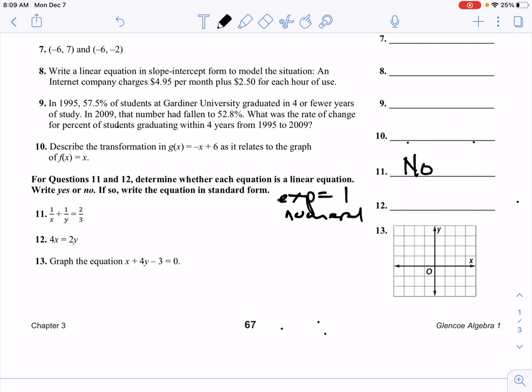All right, number 12, 4x equals 2y. Well, they're both in the numerator, that's okay. They both have an exponent of 1 and they're not multiplying by each other. So yeah, this is linear. Now if we're going to write it in standard form, remember that's the form ax plus by equals c. So the big thing is you've got to have x and y on the same side as each other, and then your x needs to be positive. And then they also have to be integers. All your numbers need to be integers.